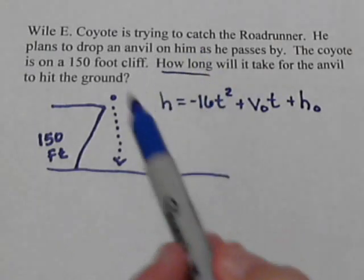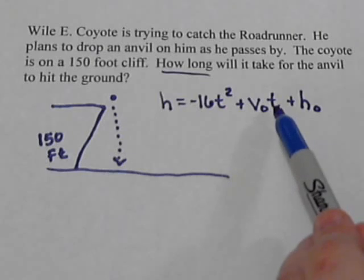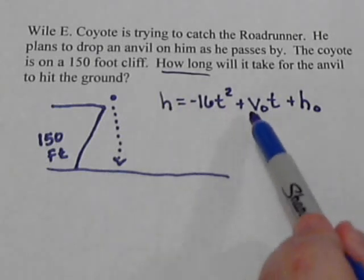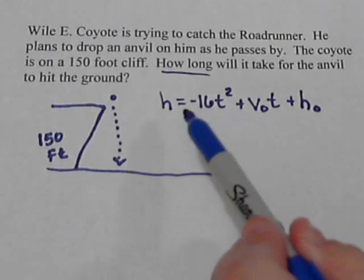We want to know how long this will take, so that's our T. And if we want to find the T, we've got to put numbers in all these other places.